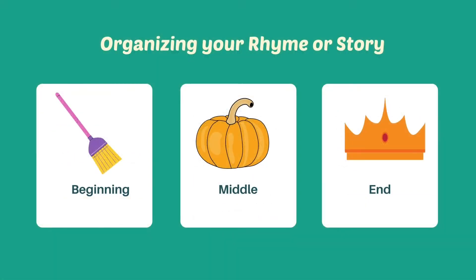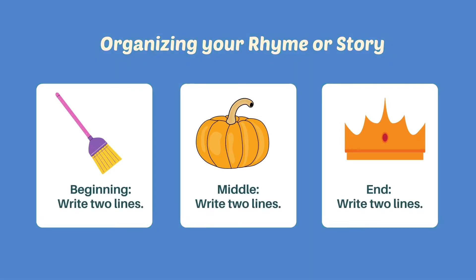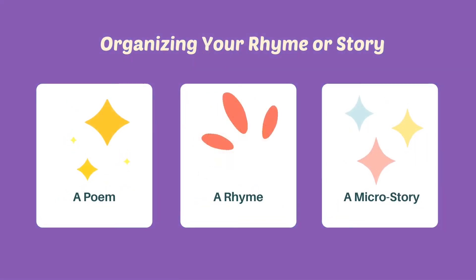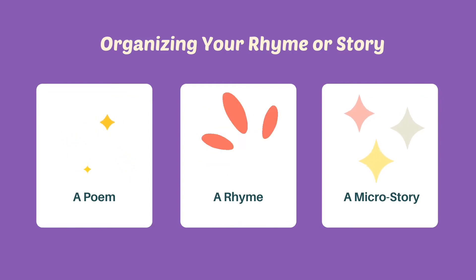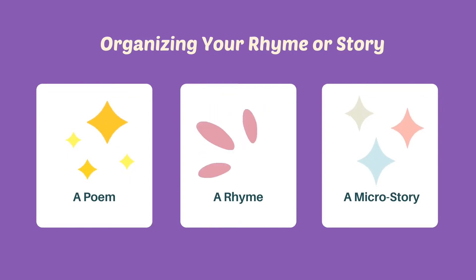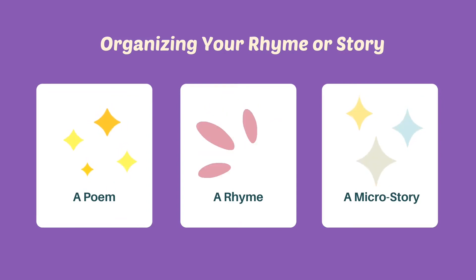All stories have a beginning, a middle, and an end. For this writing challenge you should write two lines for each part of the story, so you would have six lines total. Your fairy tale can be considered a poem, a rhyme, or a micro story — a teeny tiny story.